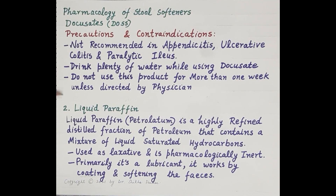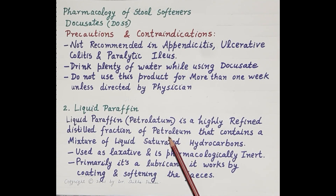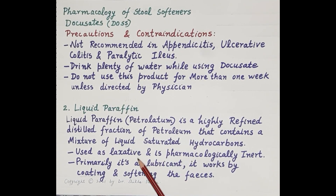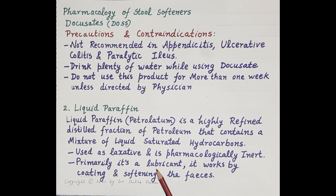The next stool softener is liquid paraffin. Liquid paraffin, or petrolatum, is a highly refined distilled fraction of petroleum that contains a mixture of liquid saturated hydrocarbons. It is used as a laxative, is pharmacologically inert, and primarily acts as a lubricant. It works by coating and softening the feces, which facilitates easy evacuation of the bowel — that is, removal of feces from the colon and intestine.